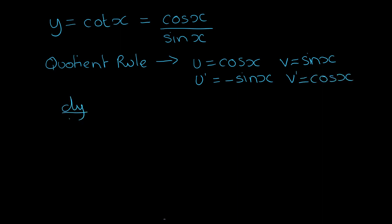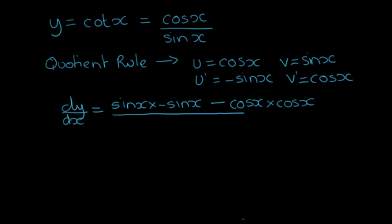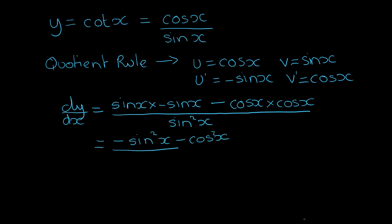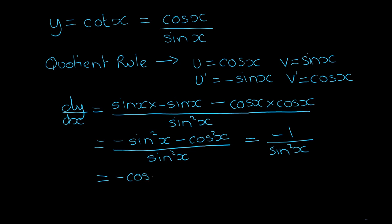dy/dx is sine x times sine x minus cos x times cos x, all over sin squared x. This gives minus sin squared x minus cos squared x over sin squared x, which is minus 1 over sine squared x. So when we differentiate cot x, we get minus cosec squared x.